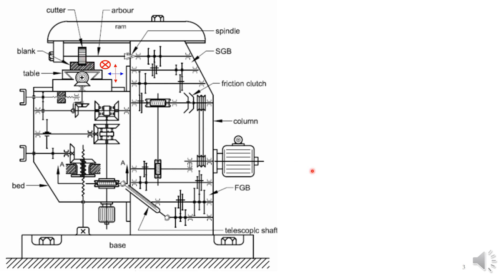This is the workpiece. This is the cutter. Now let us see how we are going to get these three motions in a milling machine. This is a horizontal spindle, knee and column type milling machine. This is the speed gearbox. The speed gearbox would impart different rotational speeds to the spindle. This is the main motor, connected to the speed gearbox via belt and pulley inside the column, and using the gearing arrangement you can give different rotational speeds to the spindle.